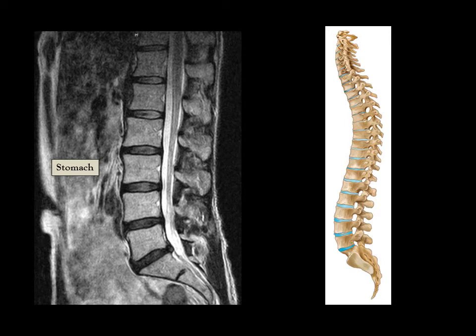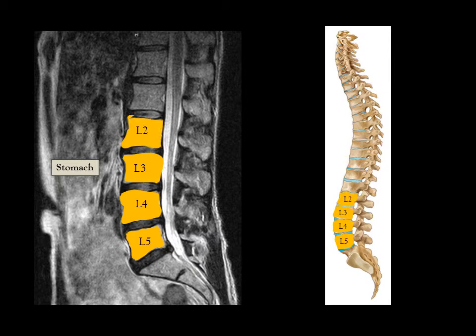Slide 1 shows a lumbar MRI, otherwise known as a low back MRI. The picture to the right of the screen is a picture of a spine for comparison. Notice the box labeled stomach on the MRI image to understand what the front of the body is in relation to the spine. The yellow highlighted boxes now appearing represent a part of the vertebra called the vertebral bodies. Also note there are five lumbar or low back vertebra.